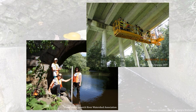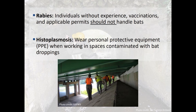Sometimes areas under bridges are not designed to be easily accessible — in fact, there are often fences or other structures meant to deter human access. In addition to recognizing potential physical hazards, it's important to take precautionary measures to avoid direct contact with bats and bat guano. Rabies and histoplasmosis are two zoonoses to be aware of, but neither are common and both can be avoided with appropriate protective measures. Do not touch bats unless you have the appropriate vaccinations, handling experience, and a permit. If you accidentally come in contact with a bat, seek medical advice early. When working in enclosed spaces with bat guano, wear personal protective equipment.